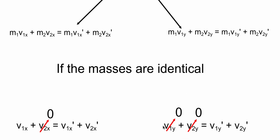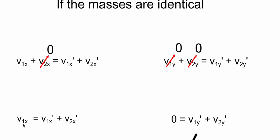For the y components, there's actually none, since nothing is moving in the y direction, so these are both a zero. So, now we're simply left with a zero on the left-hand side, and the right-hand side is v1y' plus v2y'. So, on the left-hand side, we have v1x is equal to v1x' plus v2x'. For the y's, we have a zero is equal to v1y' plus v2y'.